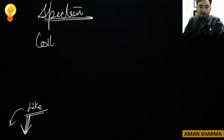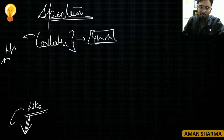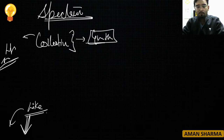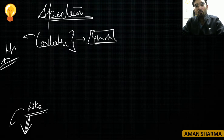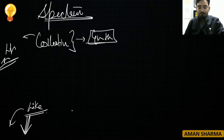Quick recap: Colistin is a type of drug used as a growth promoter in the poultry industry. It is also a life-saving drug. Because it was used as a growth promoter, our bodies developed resistance to it — so when it was needed as a life-saving drug, it no longer worked. This is the core issue regarding colistin.